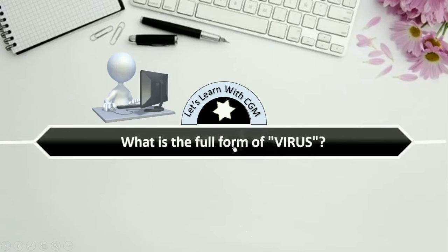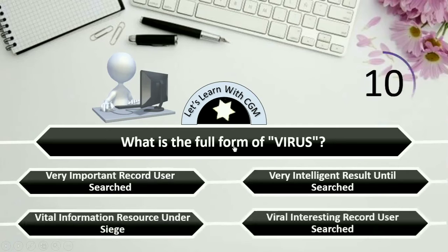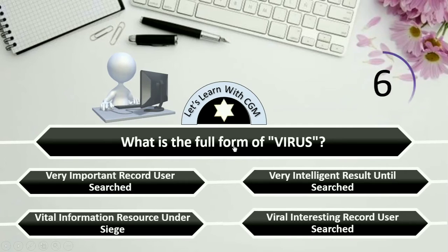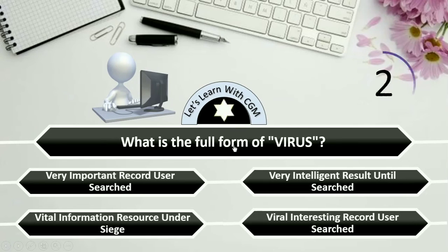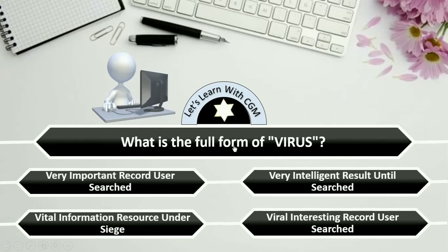What is the full form of VIRUS? Options are Very Important Record User Searched, Very Intelligent Result Until Searched, Vital Information Resource Under Searched, Virtual Information Resource Under Searched, or Viral Interesting Record User Searched.